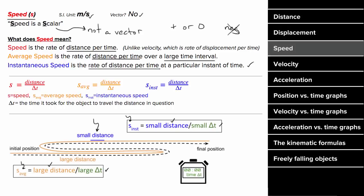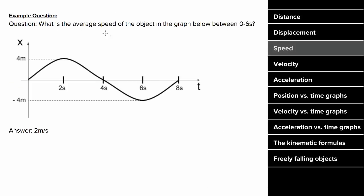What does an example problem for speed look like? If you had this graph and wanted to determine the average speed between zero and six seconds, you'd remember that average speed is the distance per time. The distance between zero and six seconds would be four meters plus four meters plus another four meters — 12 meters of distance. The time it took to travel that 12 meters was six seconds, giving an average speed of two meters per second.